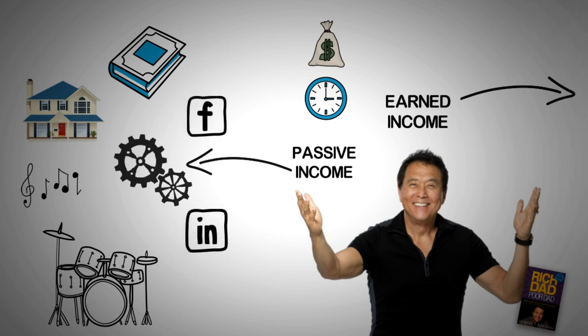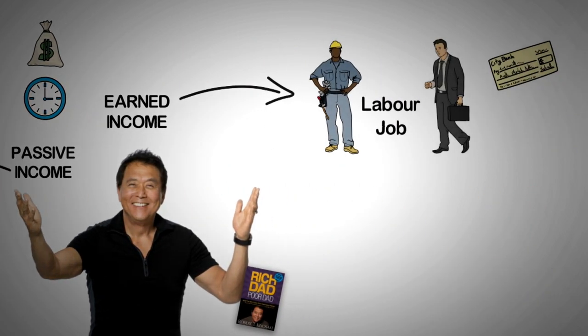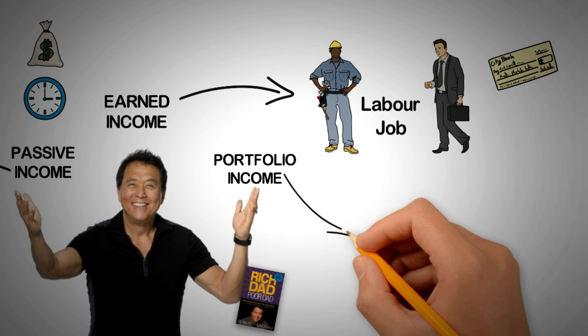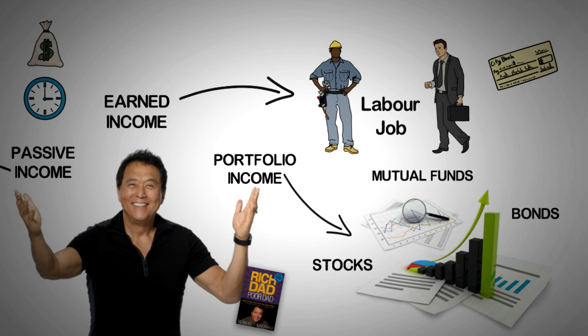The third type of income is called portfolio income. It's generally derived from paper assets like stocks, bonds, and mutual funds. These are the most popular form of investment income as they are easy to manage and maintain compared to other forms of investment.